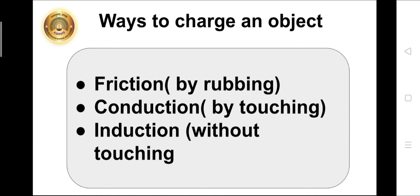There are three ways to charge an object. Charging by friction, i.e., by rubbing. The experiment of charging glass rod by rubbing with silk cloth and plastic rod by rubbing with woolen cloth about which we have learnt is based on charging by friction.